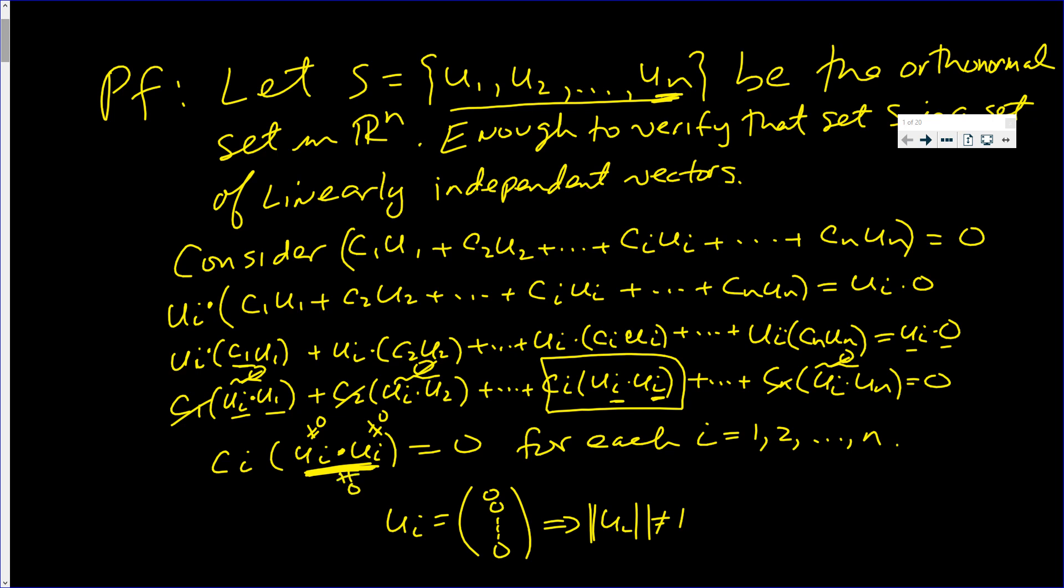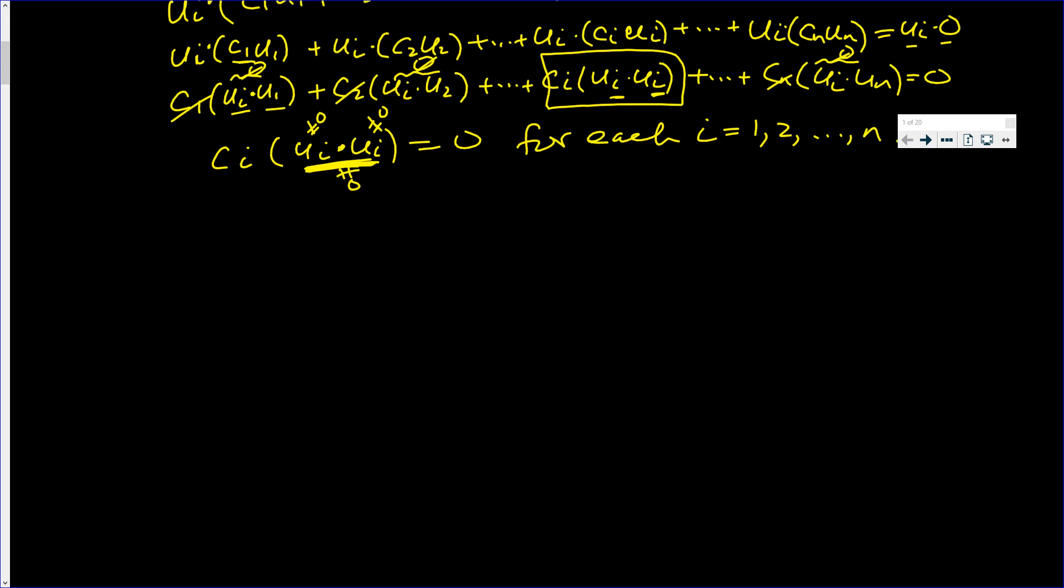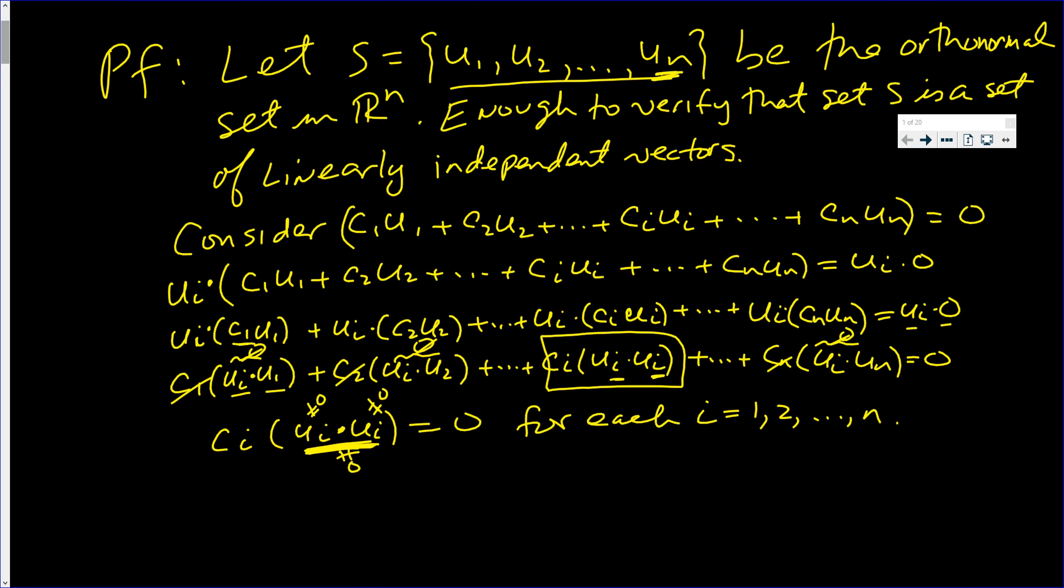Let's write that down. Since the length of u sub i is one, that implies that u sub i is not zero, but that implies that when you dot it with itself, you don't get zero. Since ci times ui dot ui is zero and this is not zero, that implies that ci equals zero.